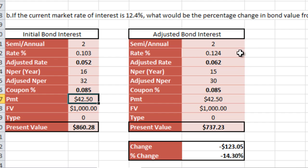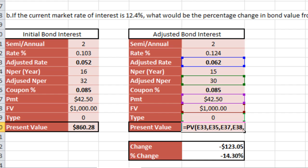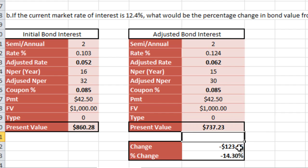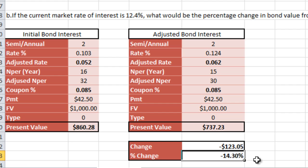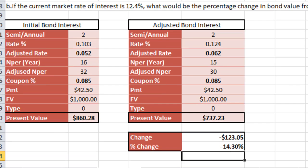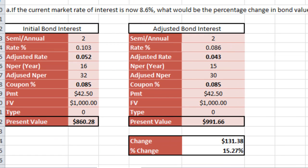We copy that over and adjust the rate to 0.124. As you can see, it gives an adjusted rate of 0.062 and a total of $737.23. This gives us a negative change of negative $123.05. Subtracting the adjusted bond rate result from the previous one gives us a negative percentage change of negative 14.3%. I hope this helps and thanks for watching.